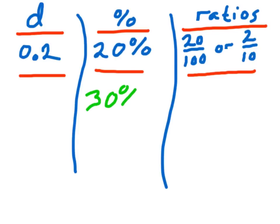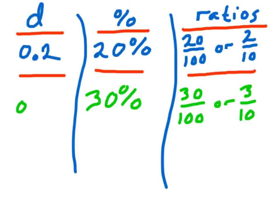Here's the number: 30%. As a ratio, that's pretty easy — that's either 30 over 100, or I could simplify that and say it's 3 out of 10. But as a decimal, it actually gets interesting and I get 0.33 repeating. All of a sudden, we end up with a slightly different scenario.